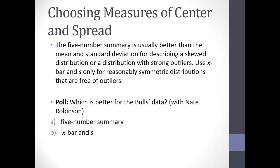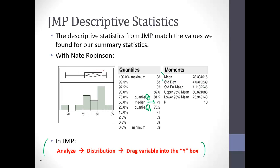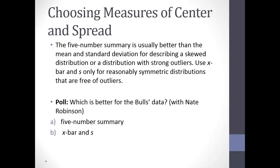Poll question: which one should be used for the Bulls data — the five-number summary (which includes the median and IQR), or the mean and standard deviation? I'm seeing a lot of hands for the five-number summary. This question comes down to: is there skewness or outliers? We found there were no official outliers using our rule, but looking at the histogram, we do have a slight skew. Who can tell me which direction the skew is? Left — exactly right. It is a slightly skewed distribution.